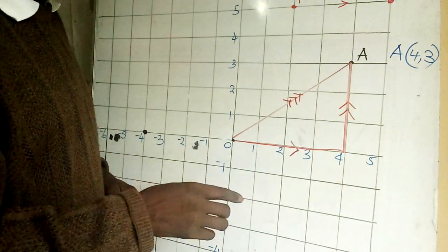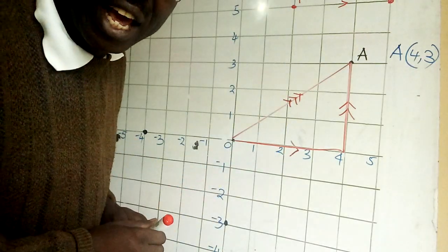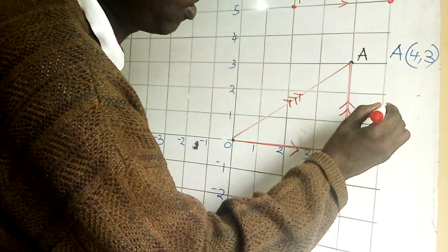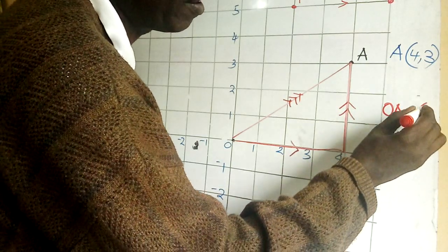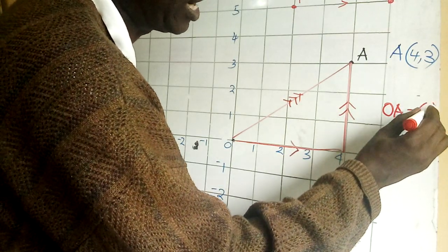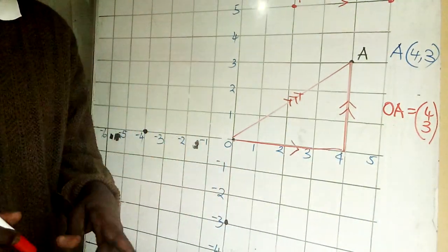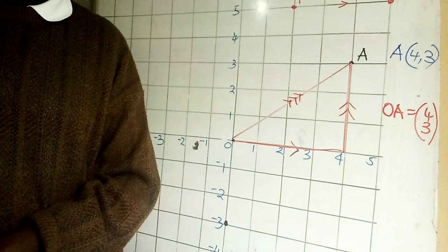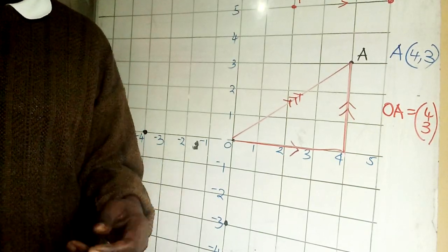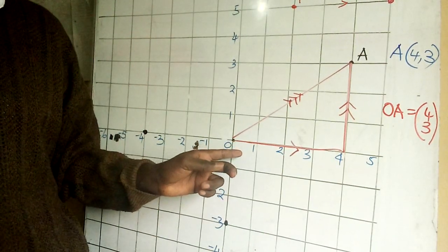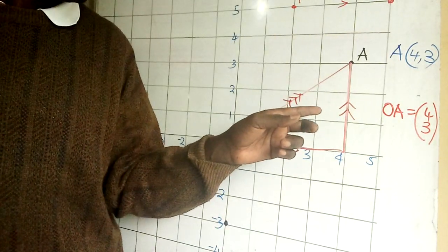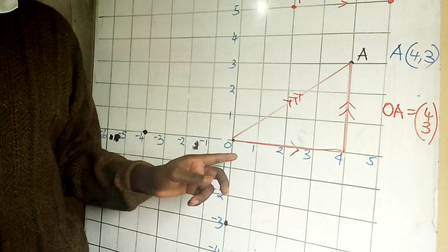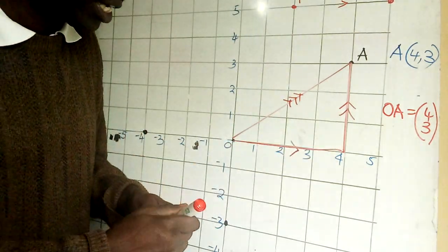A point A therefore can be written as OA in a different format now. So this is a vector but this is a point. Now using this triangle, using this triangle, this is right-angled at this point.